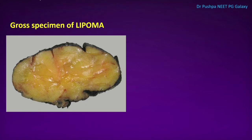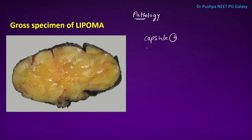This is the gross specimen of lipoma. Usually, fat is arranged in lobules separated by fibrous septa, and it is enclosed in a capsule.